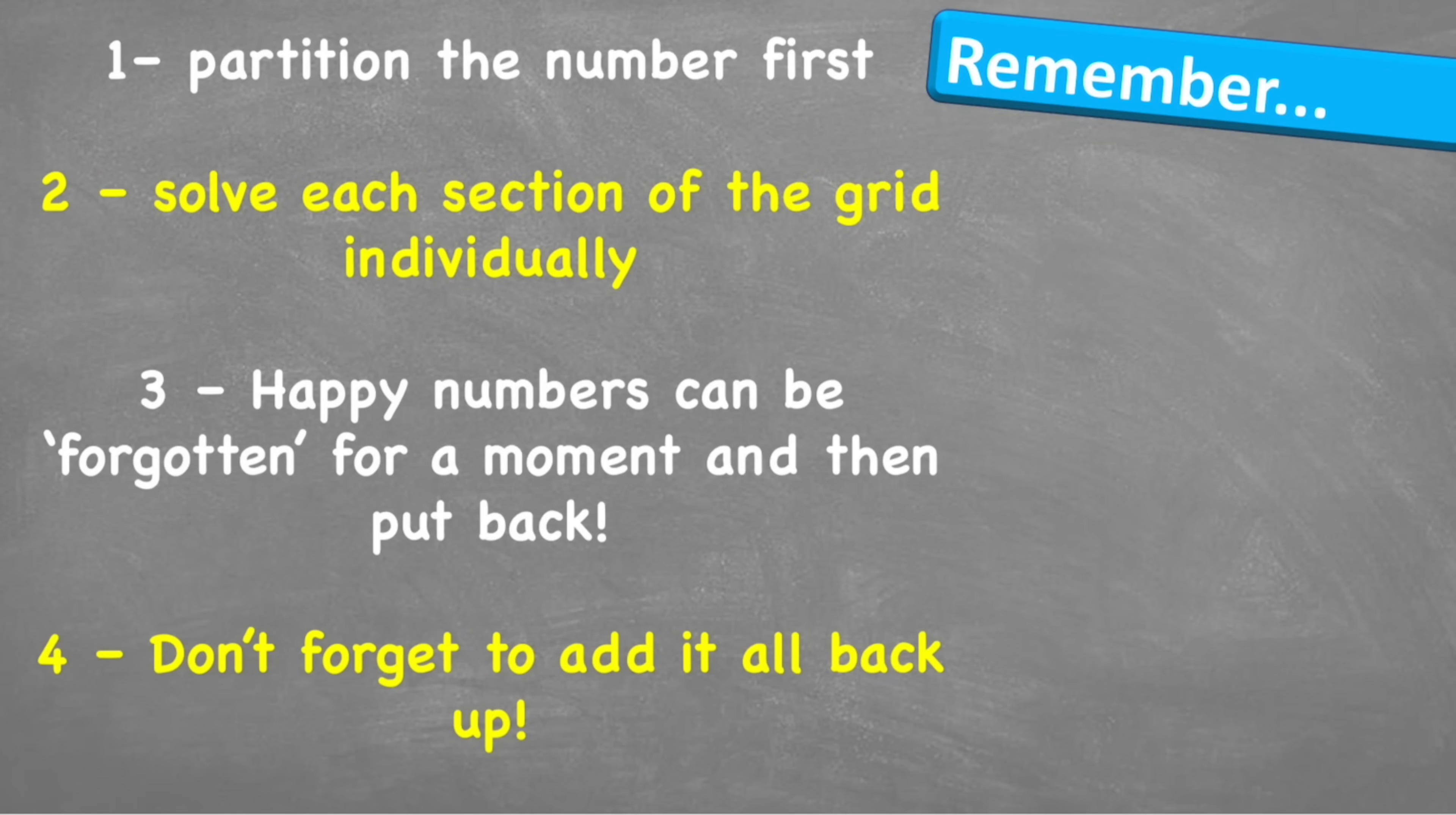Let's look at what to remember. First, you've got to partition the number. Then you're going to solve each section of the grid individually. Remembering that happy numbers can be forgotten for a moment and then put back in the answer. Happy numbers being our zeros. Don't forget to add it all up at the end. I see so many people that think they've finished grid method when they've just finished the grid. Don't forget you've got to add it back up.